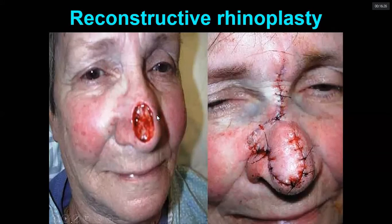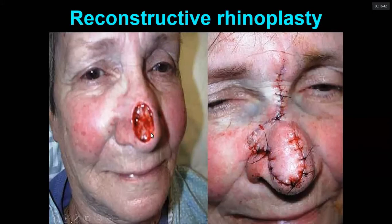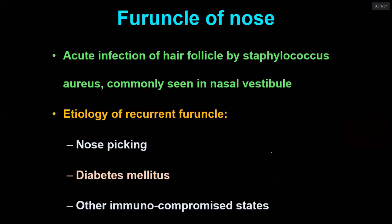This case of basal cell carcinoma has had the carcinoma excised with wide local excision, but the defect cannot be closed primarily. A flap has to be brought in to cover it — this is reconstructive rhinoplasty. All the rhinoplasty shown previously is cosmetic rhinoplasty; this is reconstructive rhinoplasty.